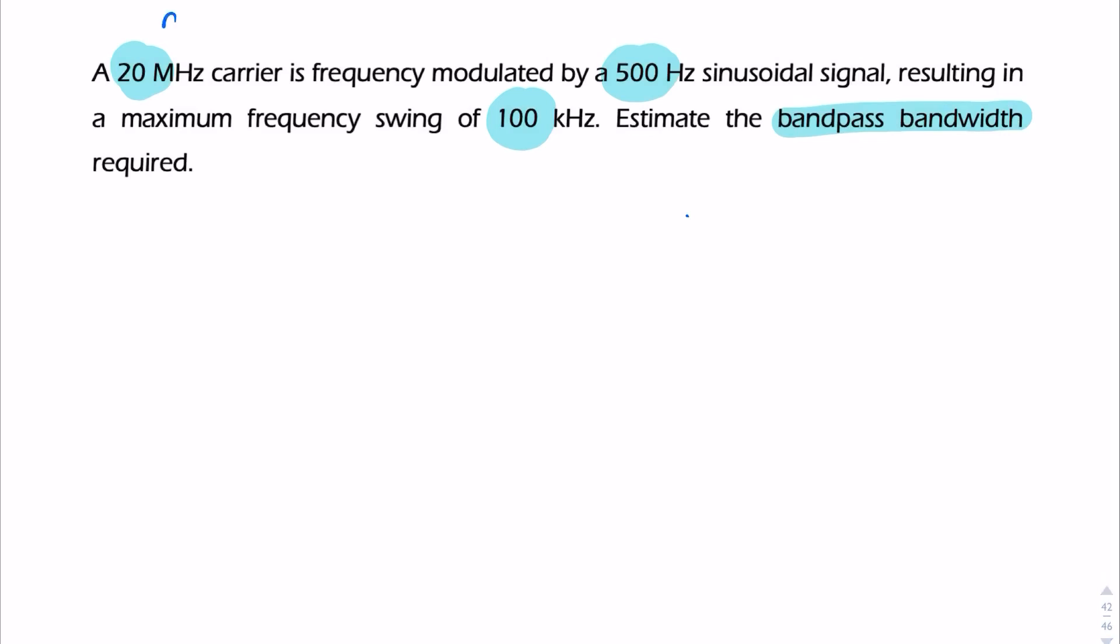So we're given fc, we're given fm, and we're given the frequency swing, which is not delta f, it's twice delta f. So we're given those three bits of information, and we're being asked to find the bandwidth.